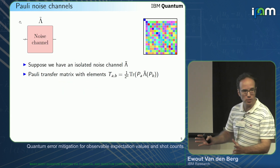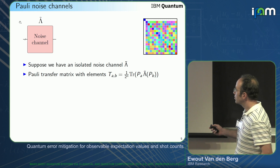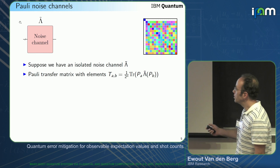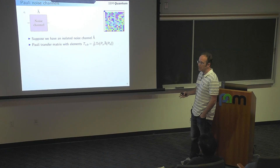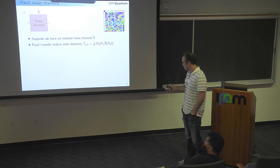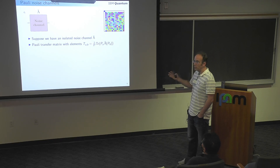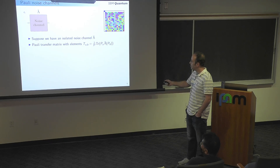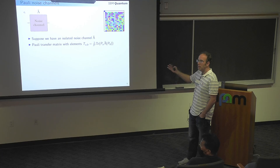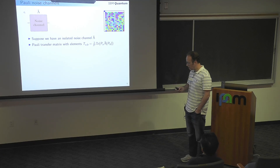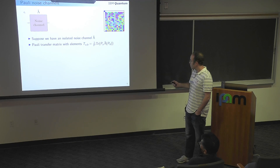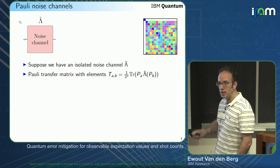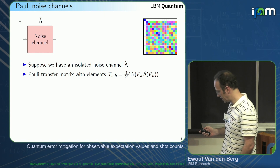Let's first look at the isolated noise channel. We have some λ̃ here. How do you characterize it? One way is to look at the Pauli transfer matrix of this noise channel. It has elements defined by Pauli terms A and B — you prepare a Pauli B, apply the noise channel, and measure the inner product with Pauli A, giving you a number. This gives a matrix that is very dense: 4^n by 4^n elements, which is a complicated characterization.